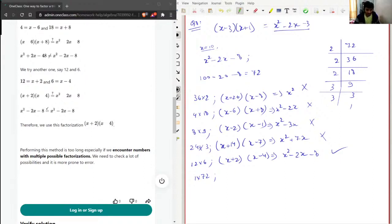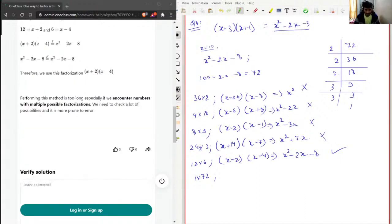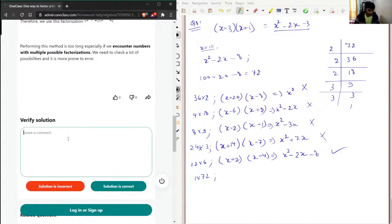So that is why this procedure is very lengthy and people don't follow this procedure. So here also it is given that performing this method is too long, especially if we encounter numbers with multiple possible factorizations. We need to check a lot of possibilities and it is more prone to error. So yeah, true. I will not check for 1 times 72 because it will not work. So again, solution given here is correct and good work. Solution is correct.